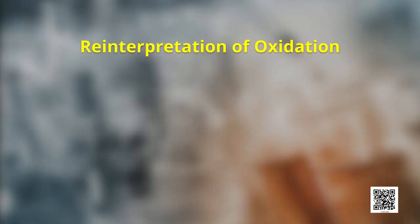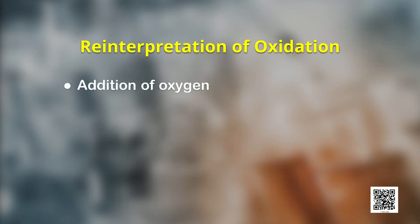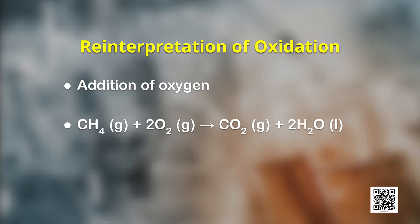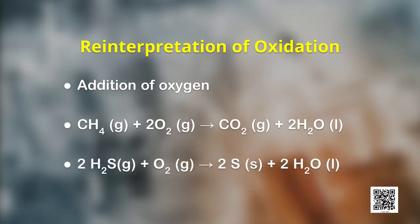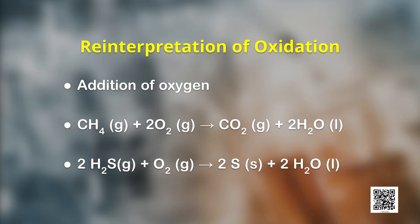Let us examine one more reaction in which methane is oxidized by addition of oxygen. On careful examination of this reaction, we observe that hydrogen of methane has been replaced by oxygen. So chemists reinterpreted oxidation in terms of removal of hydrogen from it, and therefore the scope of the term oxidation broadened to include the removal of hydrogen from a substance. When hydrogen sulphide reacts with oxygen and forms sulphur and water, this happens by loss of hydrogen from hydrogen sulphide.